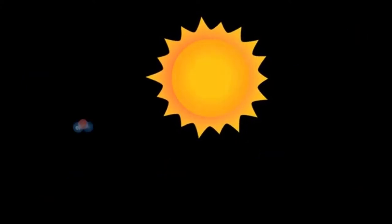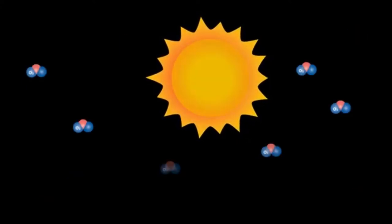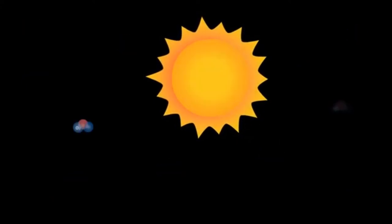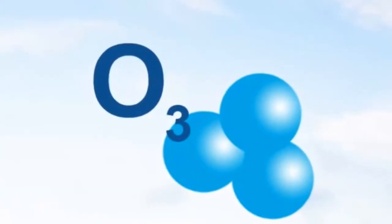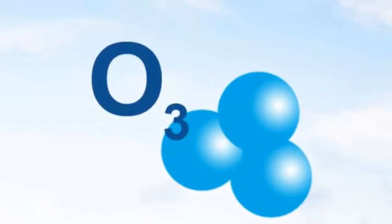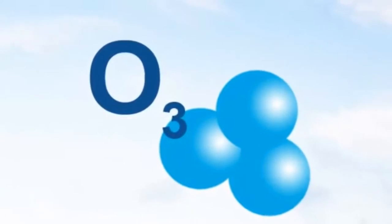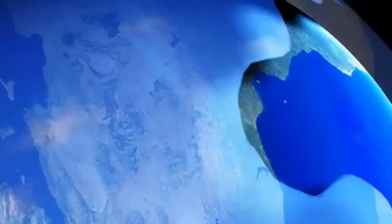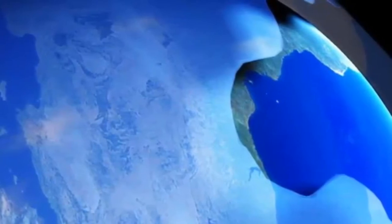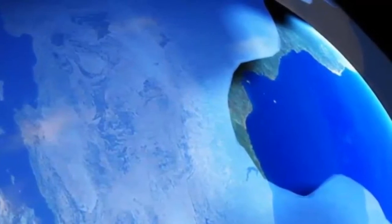Esta reacción es constante y permite que ambos gases, ozono y oxígeno, coexistan en equilibrio. Así se genera, a esas alturas, el 99% del ozono, mientras que una pequeña fracción se forma de tormentas eléctricas.